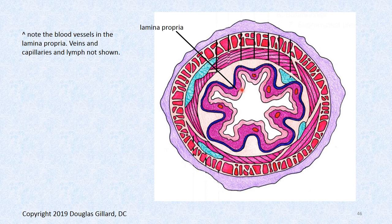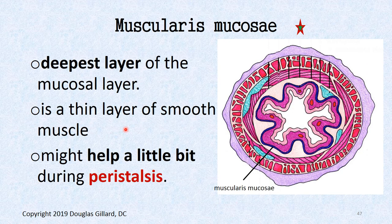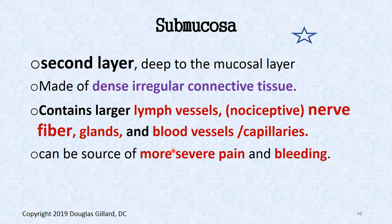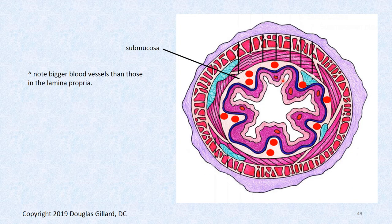The submucosal layer is the second layer down, made of dense irregular connective tissue. It contains large lymphatic vessels, larger nociceptors — so it can be more painful if acid burns its way in here — some glands, and bigger blood vessels. These blood vessels are much larger than those in the lamina propria.